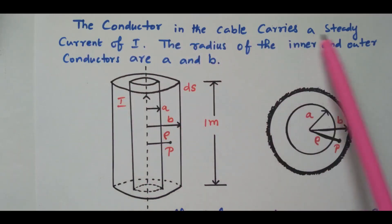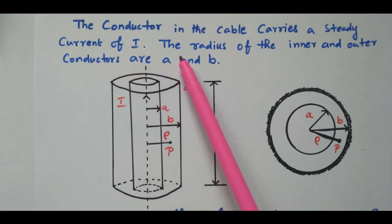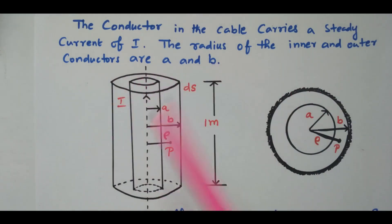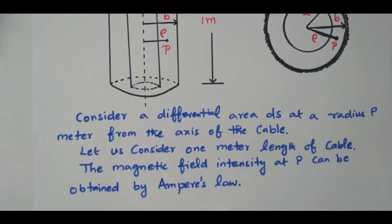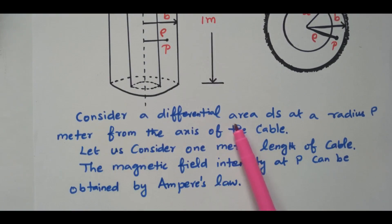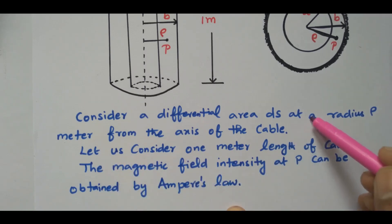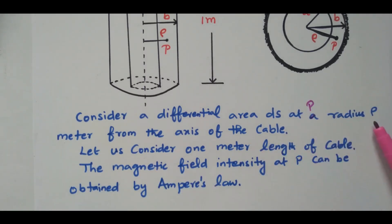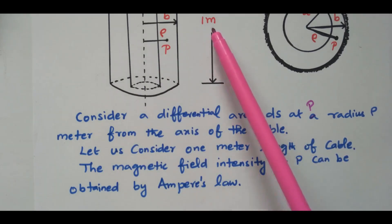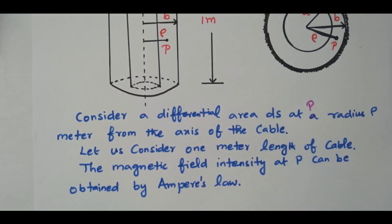The conductor in the cable carries a steady current of I. The radius of inner and outer conductors are A and B. We consider the differential area dS at a distance ρ meter from point P, at a distance ρ meter from the axis of the cable. Consider one meter length of cable. The magnetic field intensity at point P can be obtained by Ampere's law.